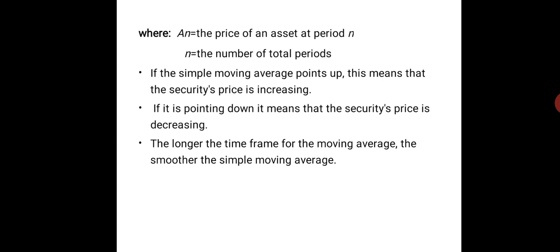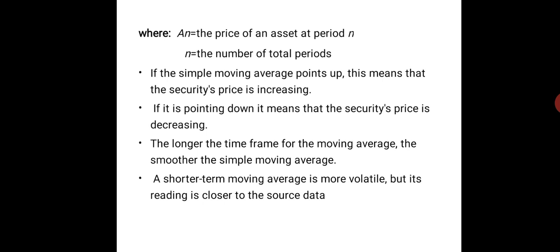The longer the time frame for the moving average — for example, taking 30 periods instead of 5 — the smoother the simple moving average becomes, as the noise is reduced. A shorter moving average is more volatile but reads closer to the source data. If we are in a shorter period time frame, there can be a lot of changes. For a long-term perspective, a longer-term moving average is more appropriate.